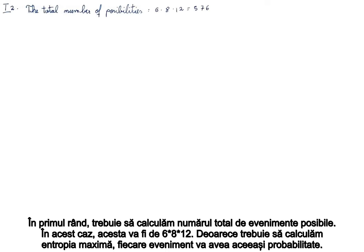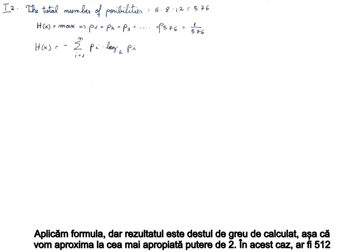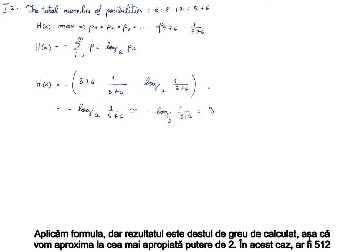First of all, we need to compute the total number of possible events. In this case, it will be 6 times 8 times 12. Because we need to compute the maximum entropy, each event will have the same probability. We apply the formula, but the result is pretty hard to compute, so we will just approximate to the nearest power of 2. In this case, that would be 512.